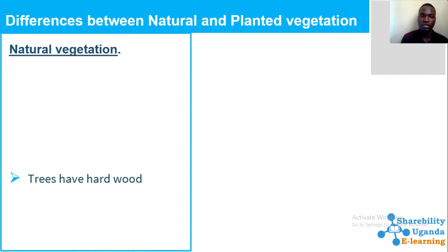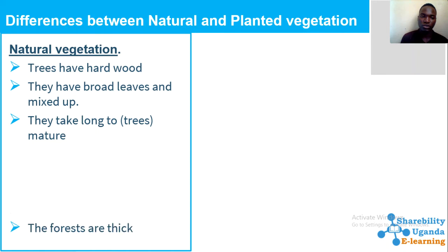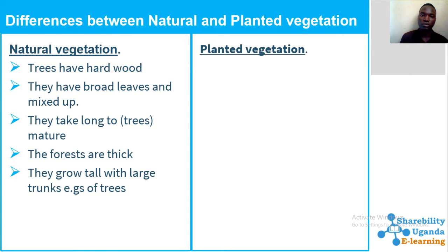Natural vegetation trees have hardwood, trees have broad leaves mixed with small and broad leaves, they take a longer time to mature, the forests are thick and impenetrable, and they grow tall with large trunks. Planted vegetation trees have softwood. Planted vegetation trees take four to five years to mature, like pine trees, whereas trees in natural vegetation like the mevoli tree take around 15 years to mature.